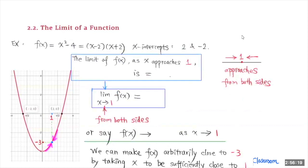First take a look at this function here. This is a quadratic function. If you factor this, it factors into x minus 2 times x plus 2. So the x-intercepts are 2 and negative 2. This is a graph for this quadratic function — it is a parabola with the two x-intercepts here and here. Now you can look at this function as x approaches 1 from the left side and from the right side.